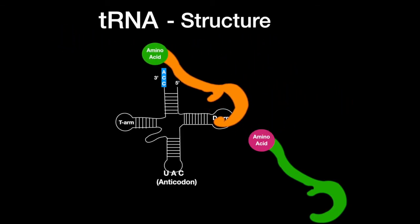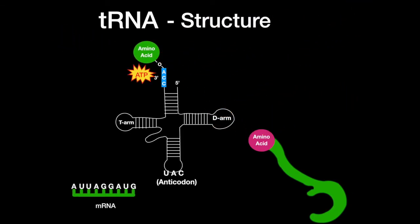If the tRNA does get mischarged, then the codon will be read correctly but the wrong amino acid will be inserted.